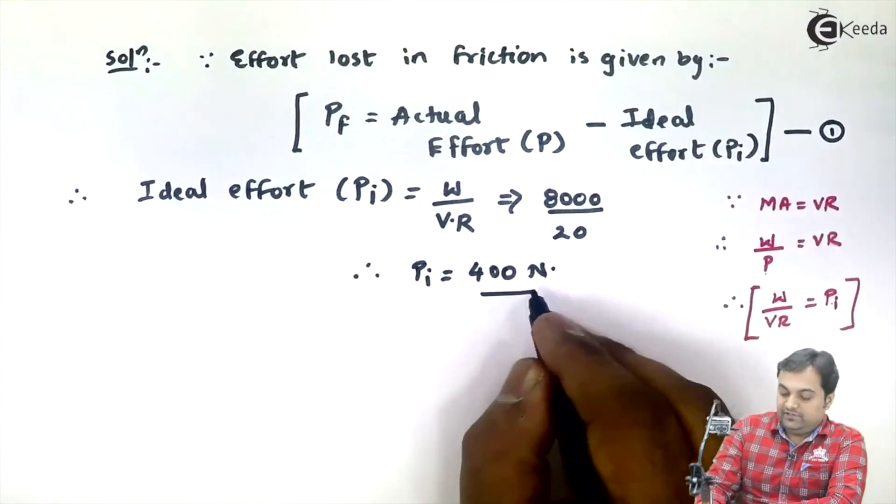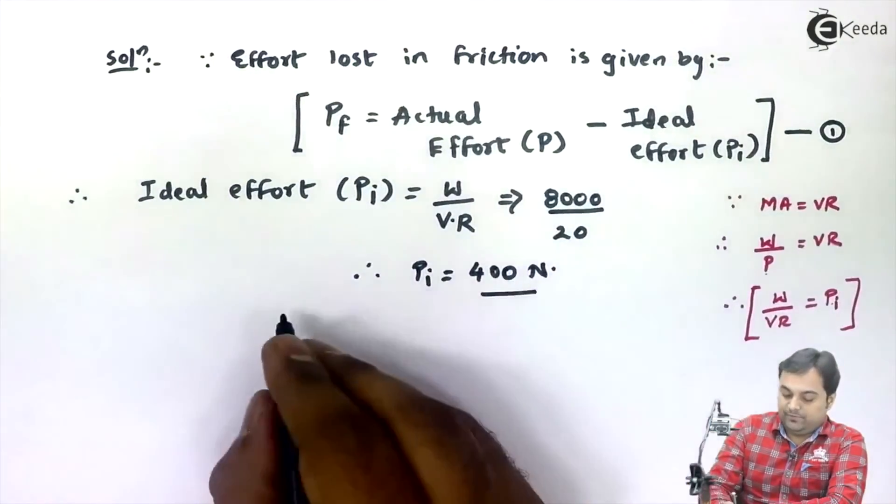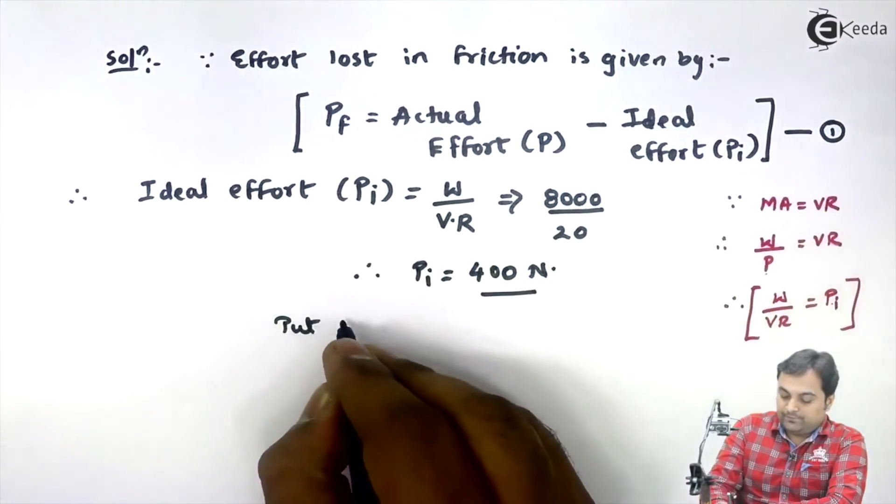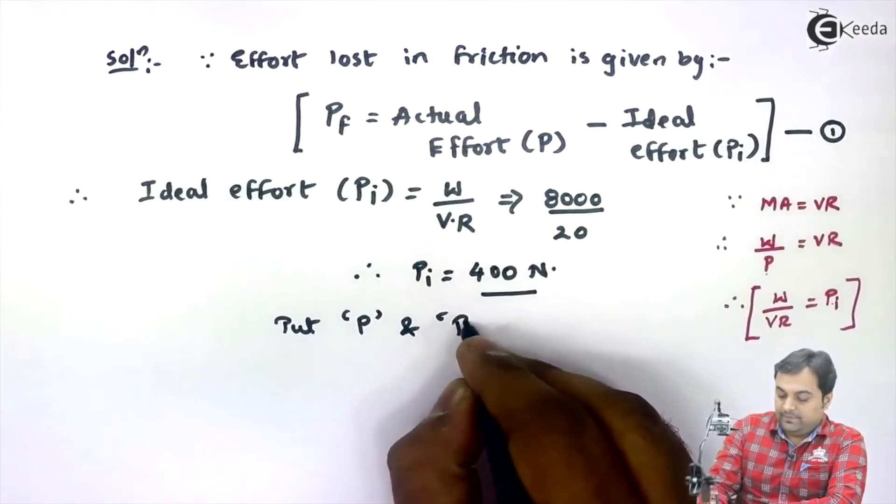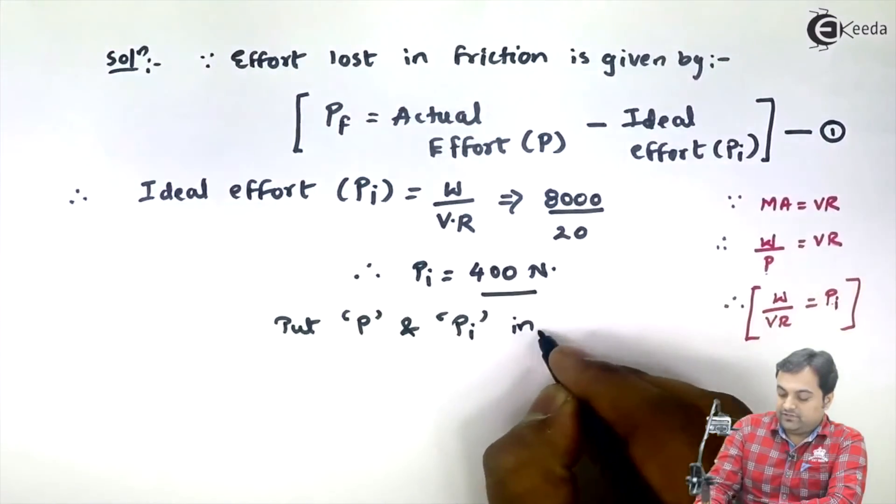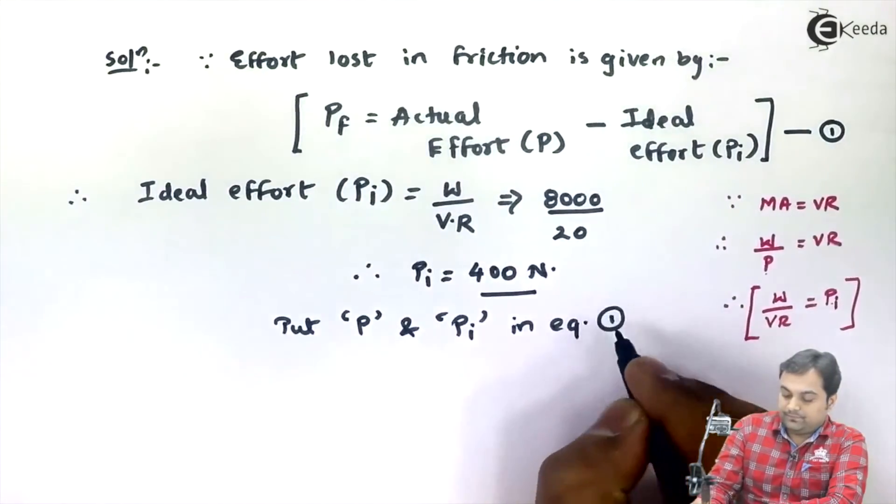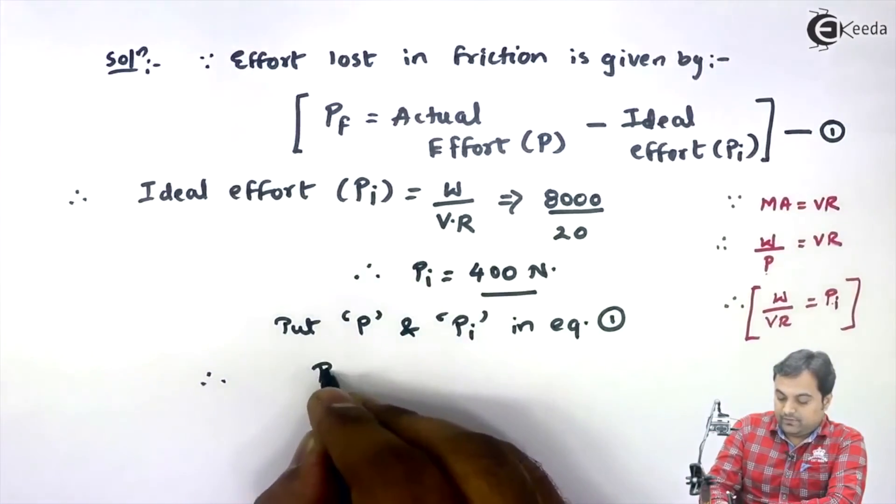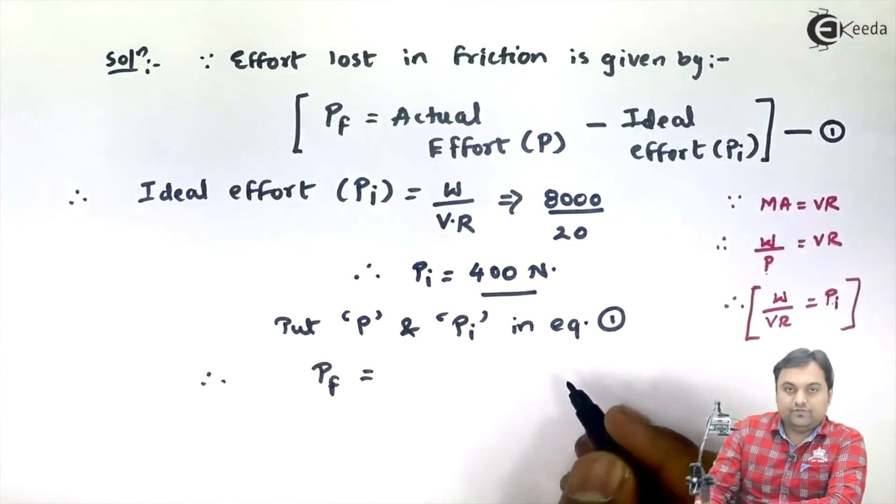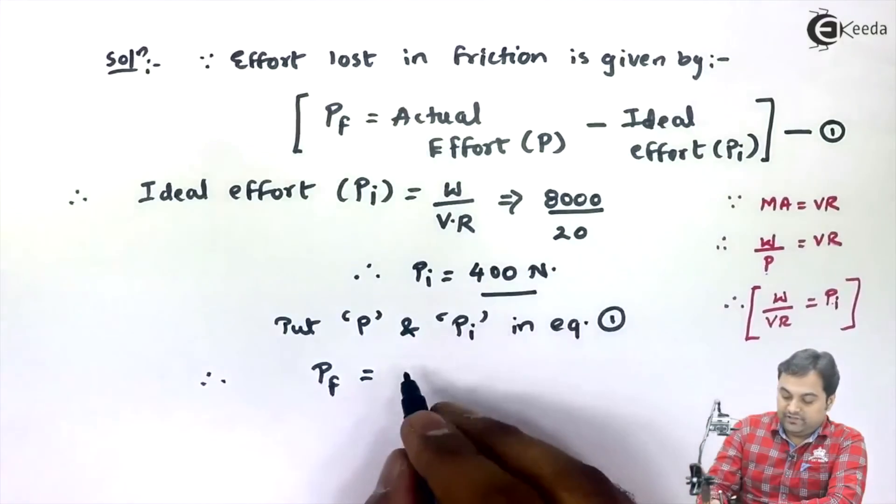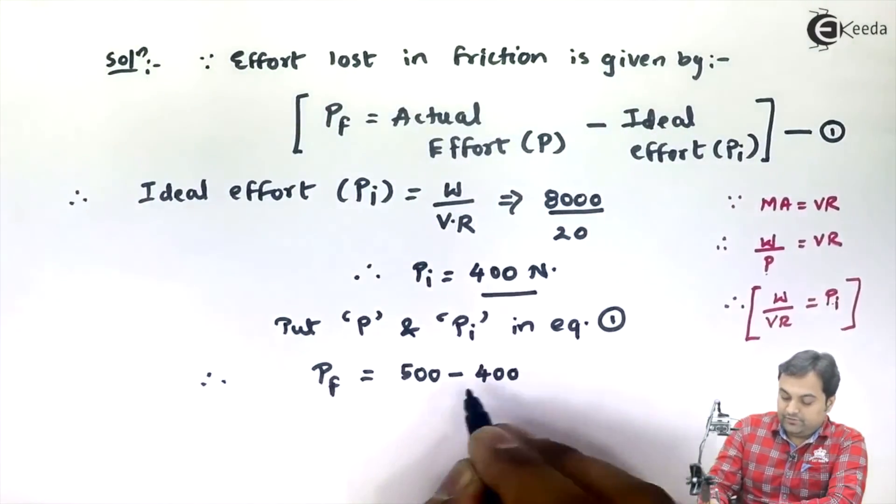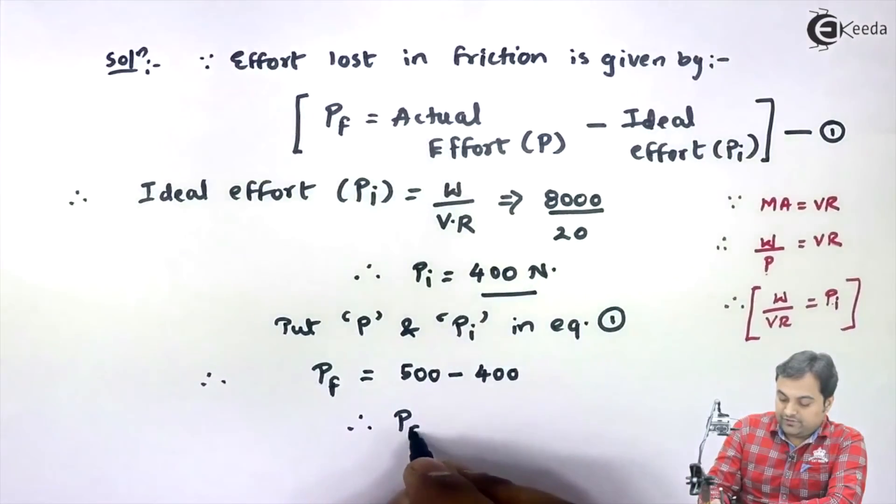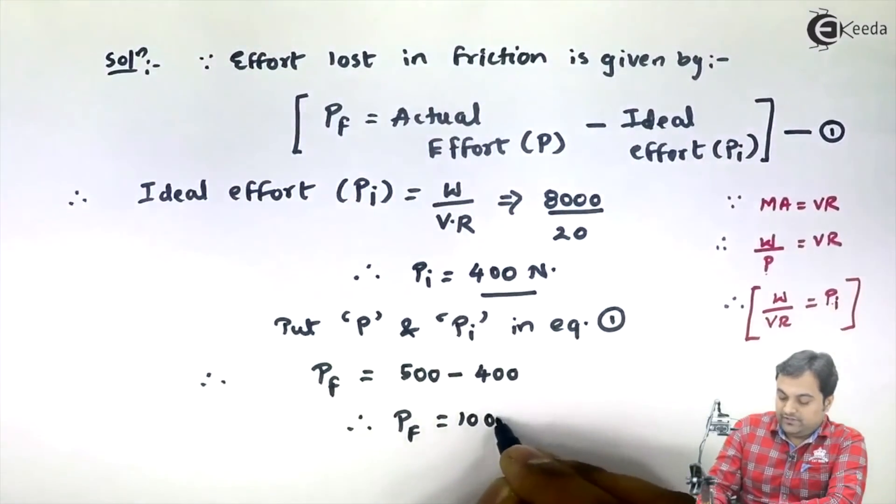Once I know ideal effort, actual effort value is given in the problem. Put P, that is actual effort, and PI, ideal effort, in equation 1. Therefore, effort lost in friction is equal to actual effort is 500 Newton, ideal effort is 400 Newton. So from this, effort lost in friction comes out to be 100 Newton.